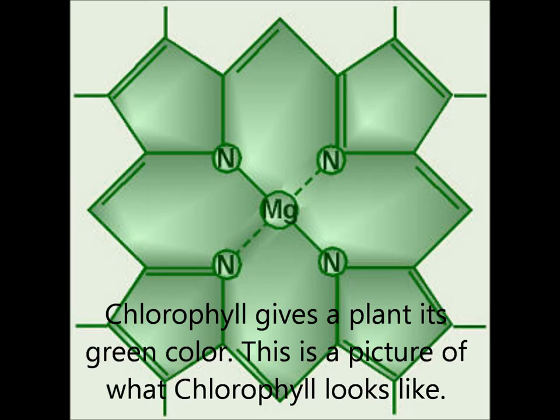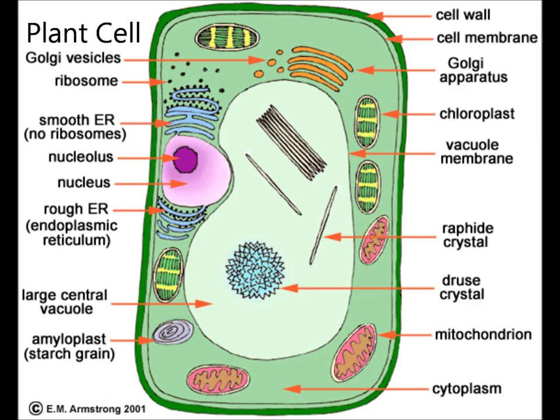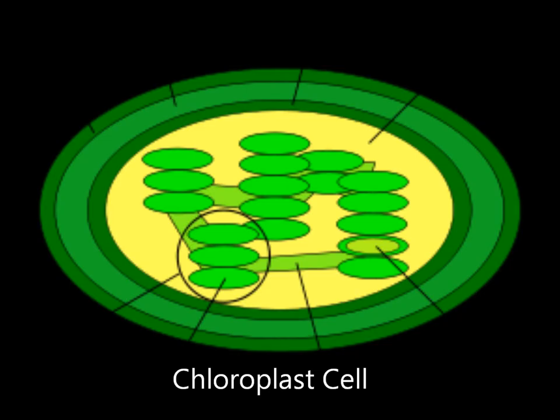These reactions occur in two different stages: the light-dependent and the light-independent. The first set of reactions is called the light-dependent reactions. The light-dependent reaction only occurs in the presence of sunlight. This reaction starts inside of the thylakoids.